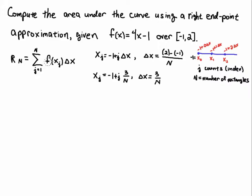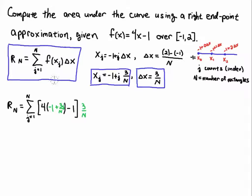Now let's take this information and substitute it back into our function. Our function is 4x minus one, so we take x sub j — which is minus one plus j times three over n — and substitute it into 4x_j minus one, then multiply that by delta x, which is three over n.